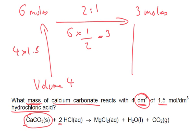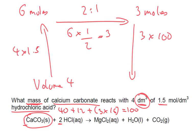Finally, we want to find the mass. Calcium is 40 on the periodic table, so the molar mass of calcium carbonate is 40 plus 12 for carbon, plus 3 times 16 for oxygen — giving a molar mass of 100. So 1 mole is 100 grams, but we've got 3 moles. So 3 times 100 gives us 300 grams. That's our final answer.